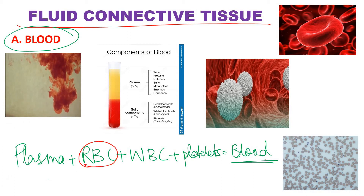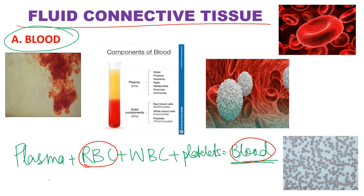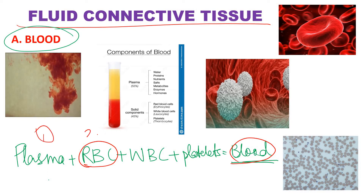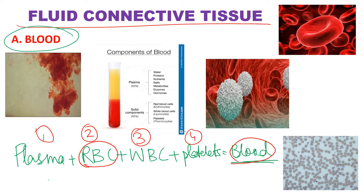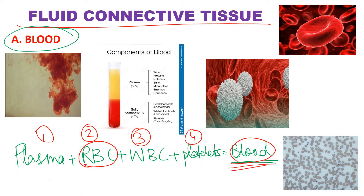RBC is red in color, and blood is also red in color. Blood is a liquid connective tissue, but it has four components: number one plasma, number two RBC, number three WBC, and number four platelets. When these four components combine, that combined substance is called blood.